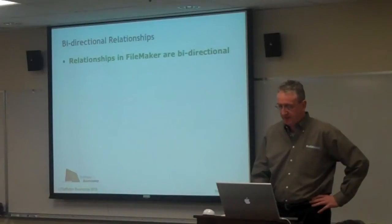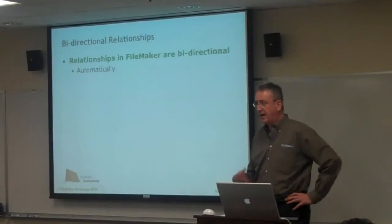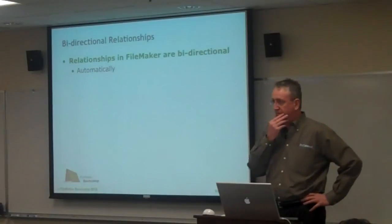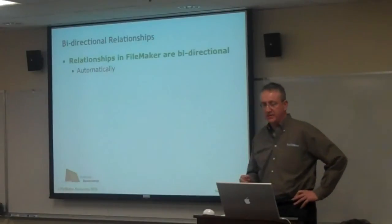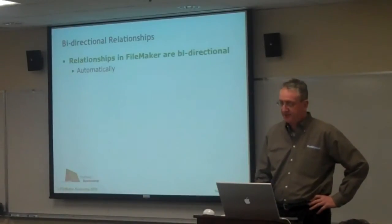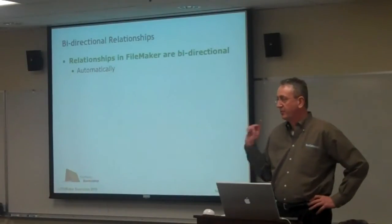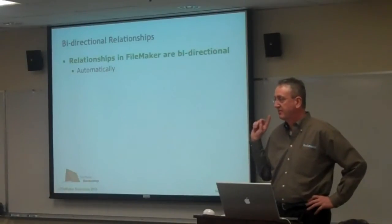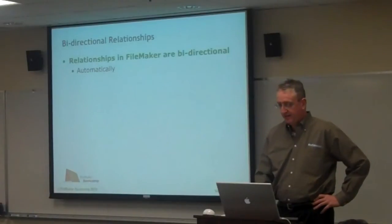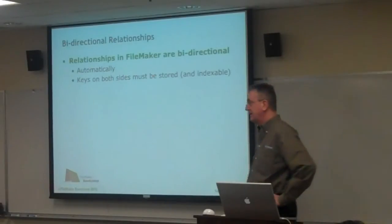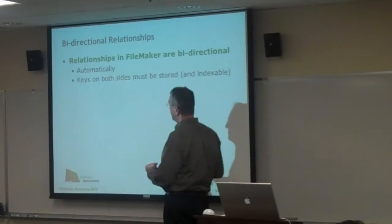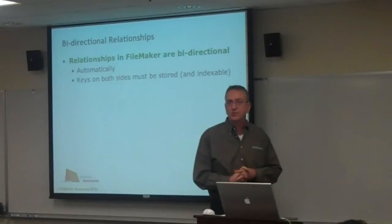Where we left off: relationships in FileMaker are bi-directional automatically — that's what they tell us when we buy the product. But not in every case. They have a relationship in both directions, the fields on both sides of both tables you're relating — the table occurrences — the fields have to be stored and indexable. If they're not indexed when you make a relationship, they will become so when you build a relationship and use it.